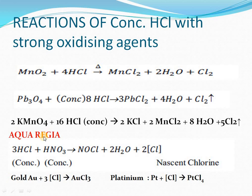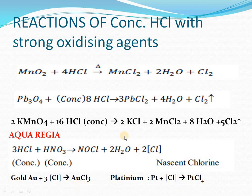Aqua regia is very important because it is used to dissolve gold and platinum. It consists of three volumes of concentrated HCl and one volume of concentrated nitric acid, which react to produce nitrosyl chloride, water, and nascent chlorine. This nascent chlorine reacts with gold and platinum. Gold has a valence of 3 and platinum has a valence of 4.